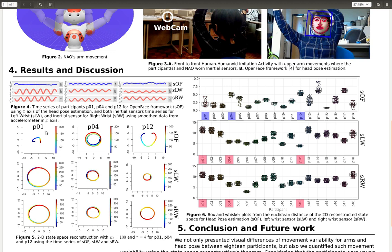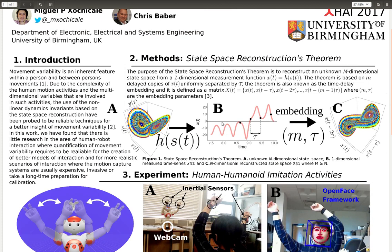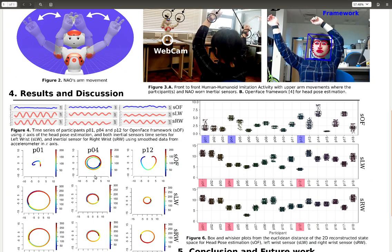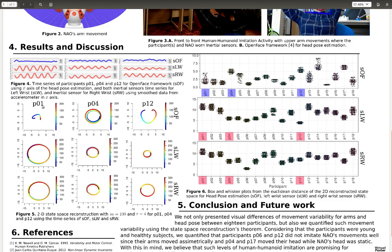Then, what we did is to compute the reconstructed state-space using m equal to 100 and tau equal to 4. We used this time series in order to get this reconstructed state-space, which is shown here for participant 1, 4, 12, using again the OpenFace framework, left wrist sensor and right wrist sensor.